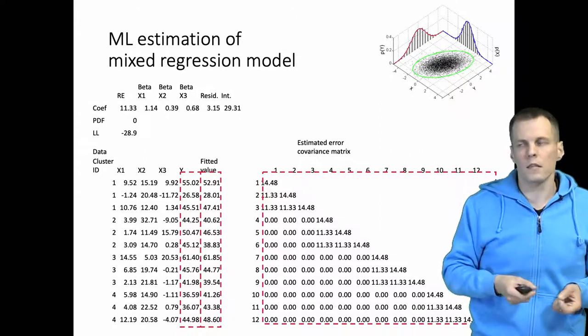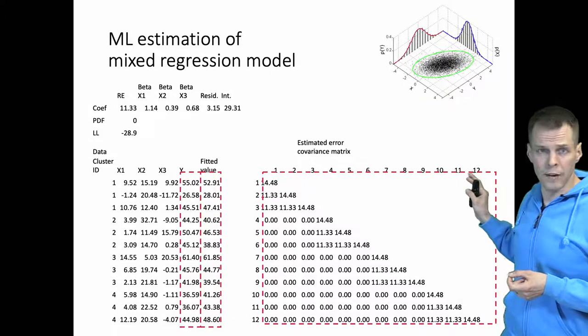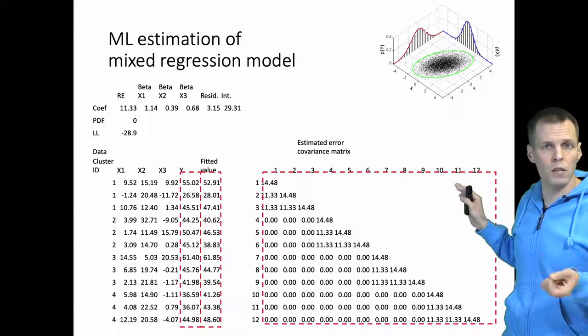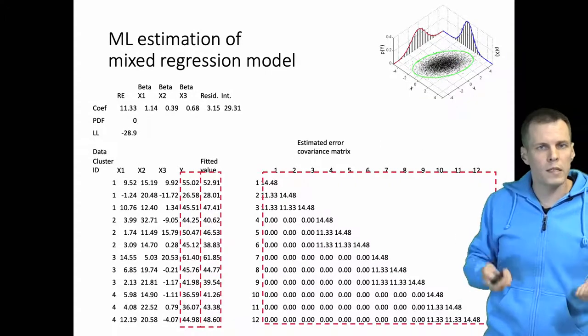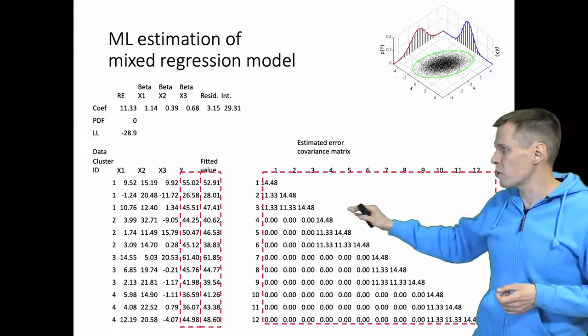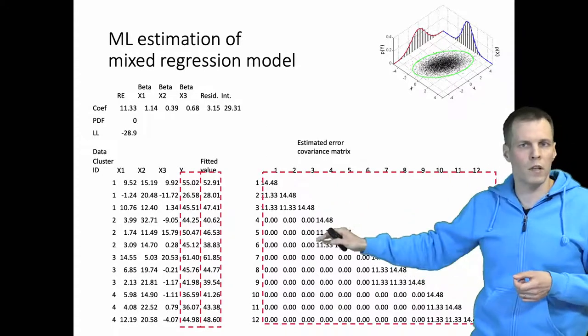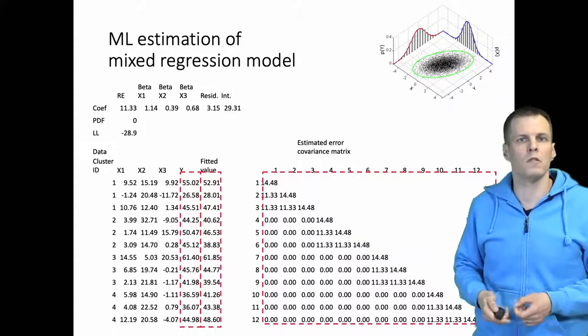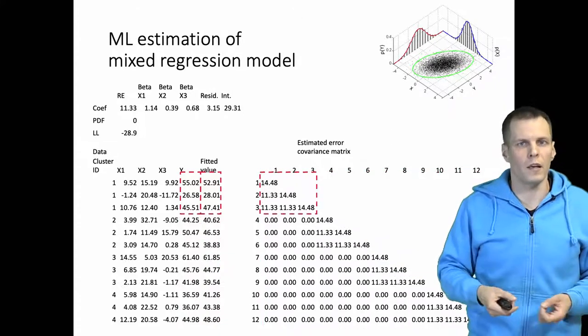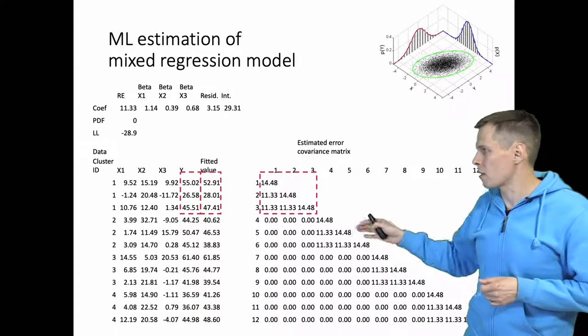In practice this would be very difficult to calculate if we have a large number of observations. So we simplify. We know that these observations are independent between clusters, so the error terms don't correlate between clusters, so we can calculate the likelihood of one cluster at a time.